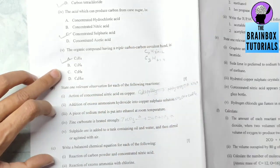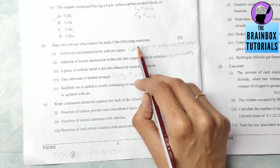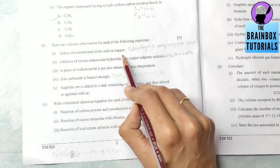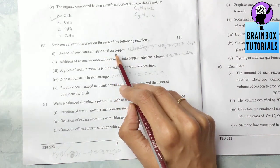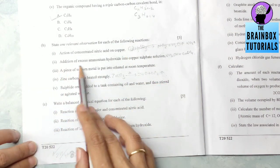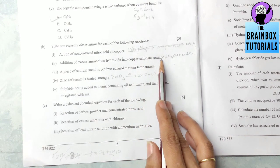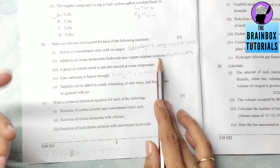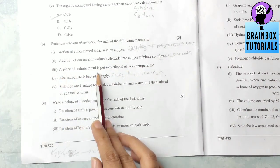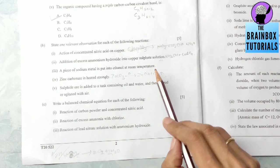Part B: State one relevant observation for each of the following reactions. Number one: addition of concentrated nitric acid on copper. The observation will be reddish brown color gas will be evolved, that is NO2 nitrogen dioxide. Number two: addition of excess ammonium hydroxide into copper sulfate solution. Deep blue solution is observed, or you can also write the name, that is tetramine copper sulfate solution. Number three: a piece of sodium metal is put into ethanol at room temperature. Hydrogen gas releases, so you will write that a gas with effervescence releases, that is hydrogen gas.